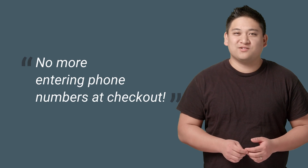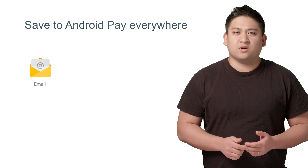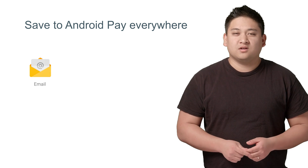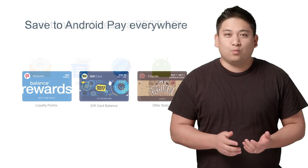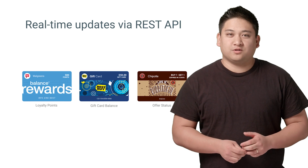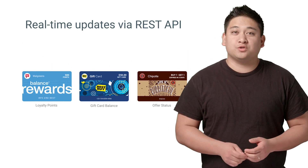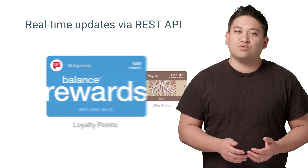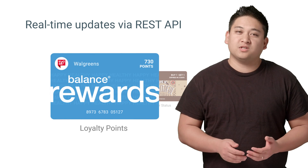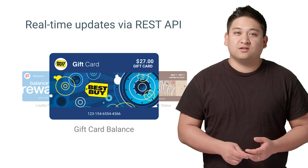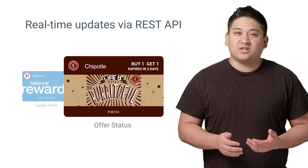No more entering phone numbers at checkout! I've shown you how to embed the Save to Android Pay Deep Link in an email, but did you know you can use it anywhere a link works? Including SMS, your website, or your Android app. And once a customer saves your digital cards to Android Pay, you can use our REST API to provide them with really cool real-time info, including how many loyalty points they've earned, their gift card balance, or their offer redemption status.